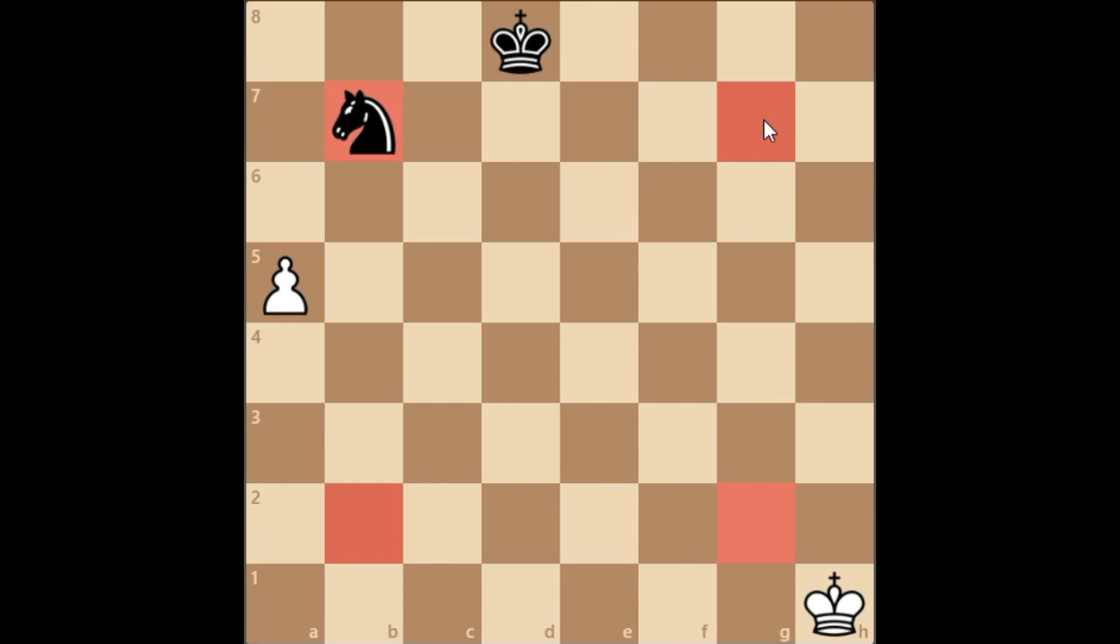Here it's White to move. How do you think White should reply? As you may remember from endgame number one, we studied the square of the pawn, so we bring that into practice here.